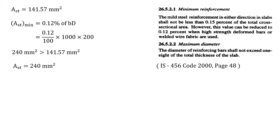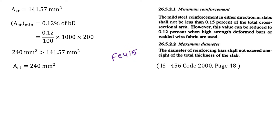Now we have to check whether this area is enough. From code book page number 48, the mild steel reinforcement in either direction in slabs shall not be less than 0.15 percent of the total cross-sectional area. However, this value can be reduced to 0.12 percent when high strength deformed bars are used. We are using Fe 415 bars, so we select 0.12 percent. For 0.12 percent of bD, we will get 240 millimeter square. This area is bigger than the calculated area, so we have to proceed with 240 millimeter square.